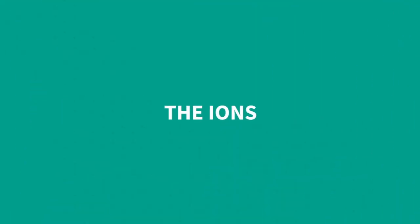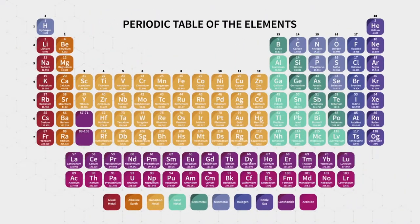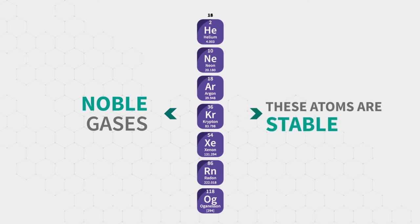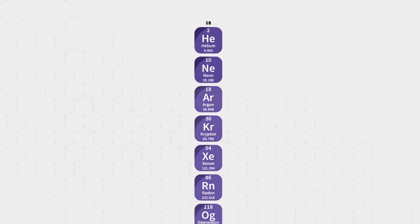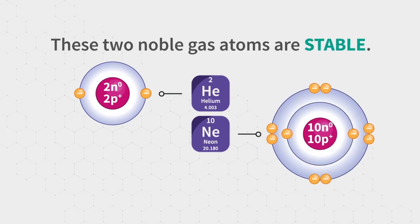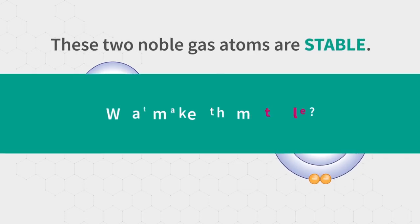The ions. The last column in the periodic table is composed of noble gases. These atoms are stable. These two noble gas atoms are stable. What makes them stable?